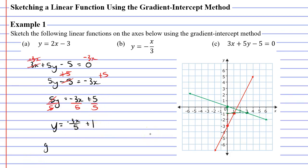We can now see that our gradient or m is negative 3 over 5. And our y-intercept or b is going to be positive 1. So we'll start by labelling our y-intercept on our y-axis which is positive 1.